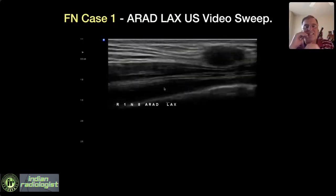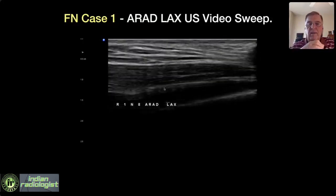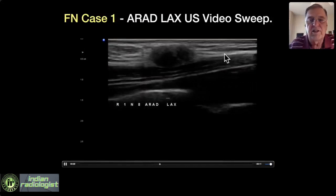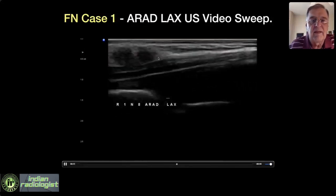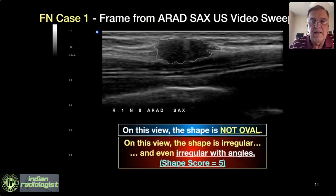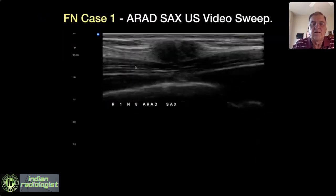Here's a long axis video loop. Notice the hyperechoic spiculations — the readers just flat didn't see that. This is not an oval shape; when I draw the region of interest, this is highly irregular. It has a thin capsule on front and a thin capsule on the back, but a thick, ill-defined echogenic rim on the ends and hyperechoic peripheral zone spicules. There's a lot there that's not reassuring.